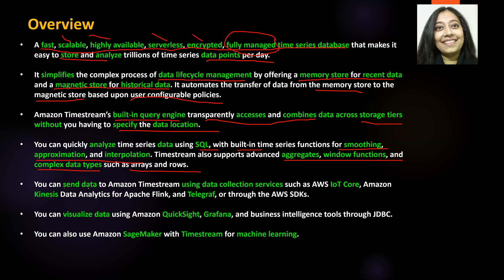You can send data to Amazon Timestream using certain data collection services like IoT Core, Kinesis, or Telegraf, or simply using the AWS SDK. Since it's a database, you would also like to visualize the data, and you can certainly do that using tools like QuickSight, Grafana, or any other business intelligence tool via JDBC. You can also use Timestream with SageMaker for machine learning purposes.